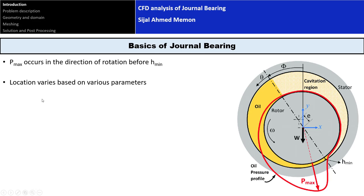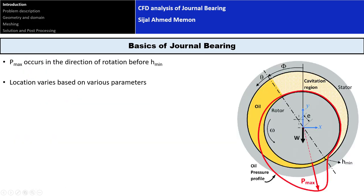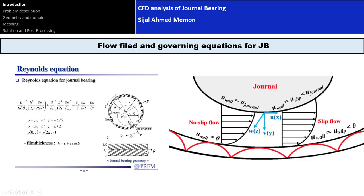Then we'll cover journal bearing behavior, how the oil inside the journal bearing behaves, the maximum and minimum pressure locations, different angles, and the cavitation region.